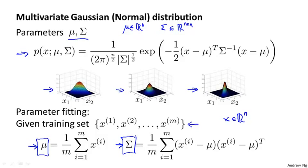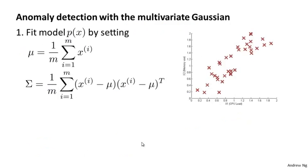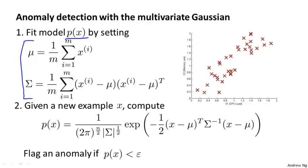Given the dataset, here's how you estimate mu and sigma. Let's take this method and plug it into an anomaly detection algorithm. First, we take our training set and fit the model — we fit p of x by setting mu and sigma as described. Next, when you're given a new test example x, we compute p of x using the formula for the multivariate Gaussian distribution. If p of x is very small, then we flag it as an anomaly. If p of x is greater than the parameter epsilon, then we don't flag it as an anomaly.